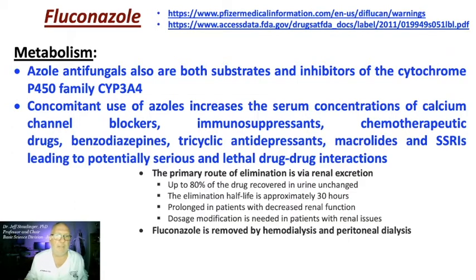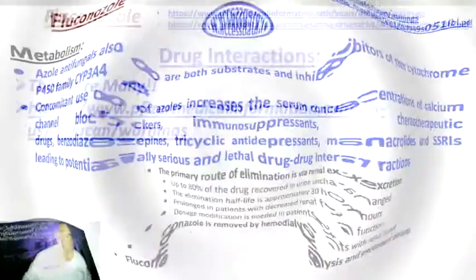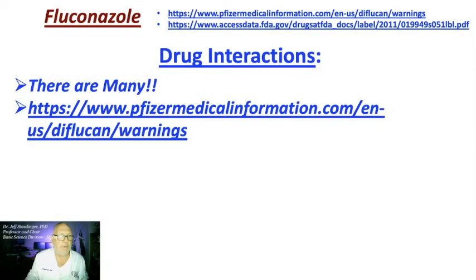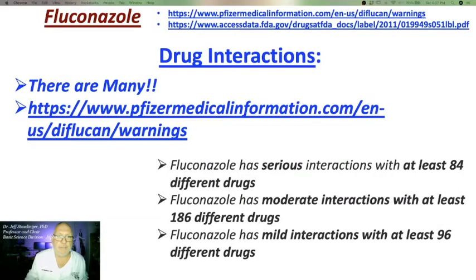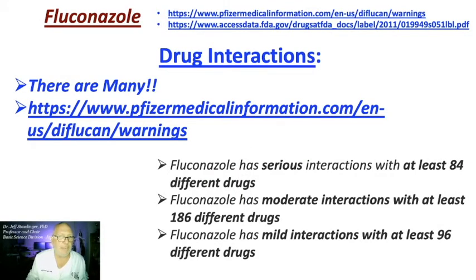The primary route of elimination for fluconazole is renal. It is removed by hemodialysis and peritoneal dialysis. There are many drug-drug interactions with fluconazole: serious interactions with at least 84 different drugs, moderate interactions with 186, and mild interactions with at least 96 different drugs.